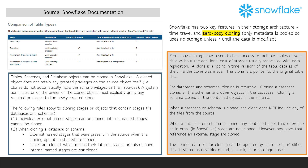Zero copy cloning is a point-in-time version of data as of the time the clone was made. The clone is metadata only — a pointer to the original data. The clone does not include any of the files from the source. Because only metadata is copied, zero copy cloning uses no data storage unless and until the data is modified.